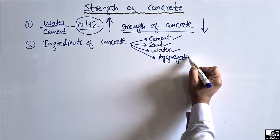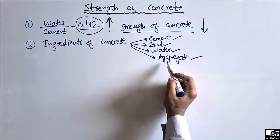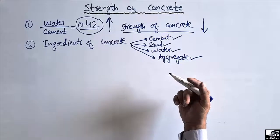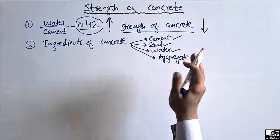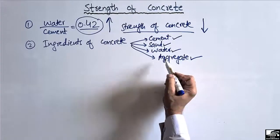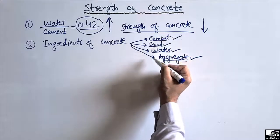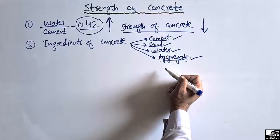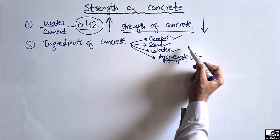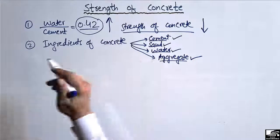The quality of water can also affect the strength of concrete. Similarly, the shape and size of the aggregate can affect the strength of concrete. Rounded aggregate can decrease the strength, while angular or cubical aggregate shape can increase the strength. Each of these four main ingredients should be individually designed in order to achieve the desired strength of concrete.